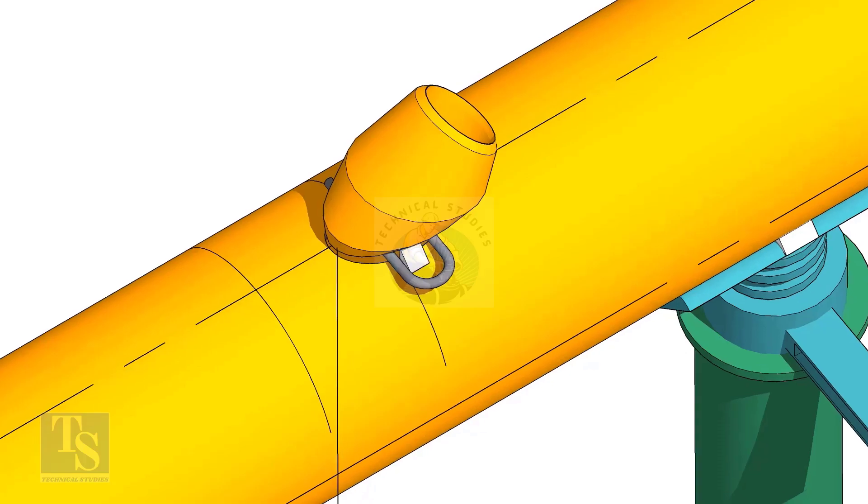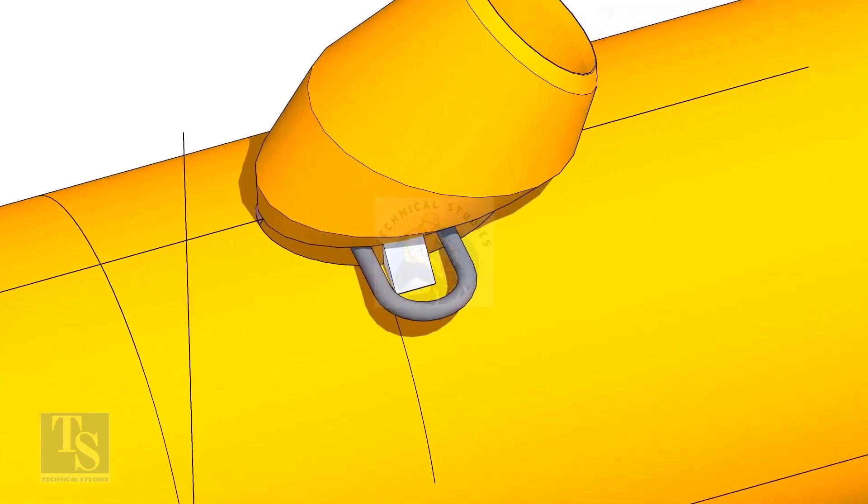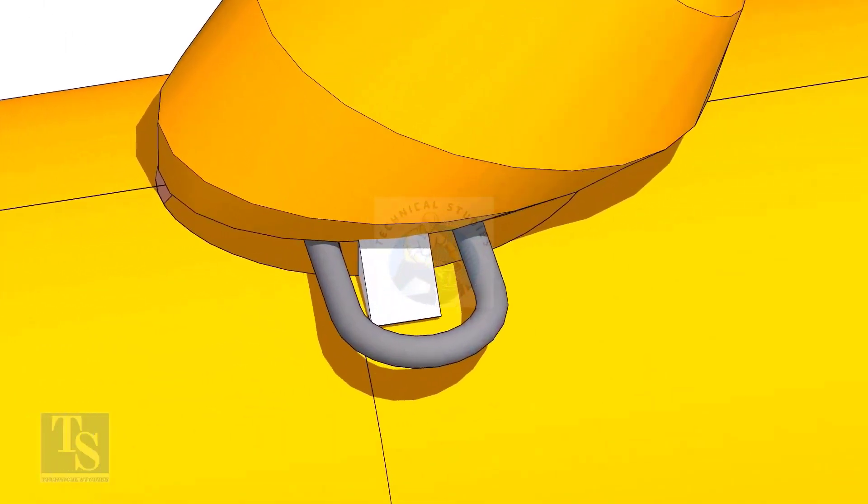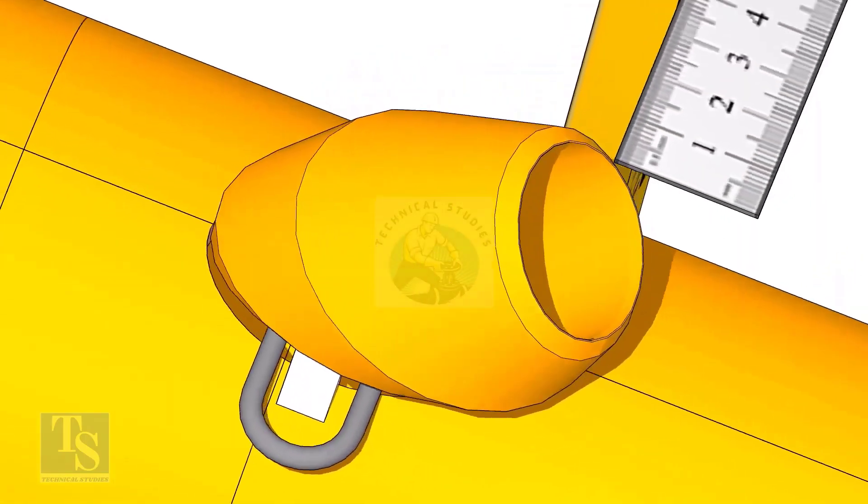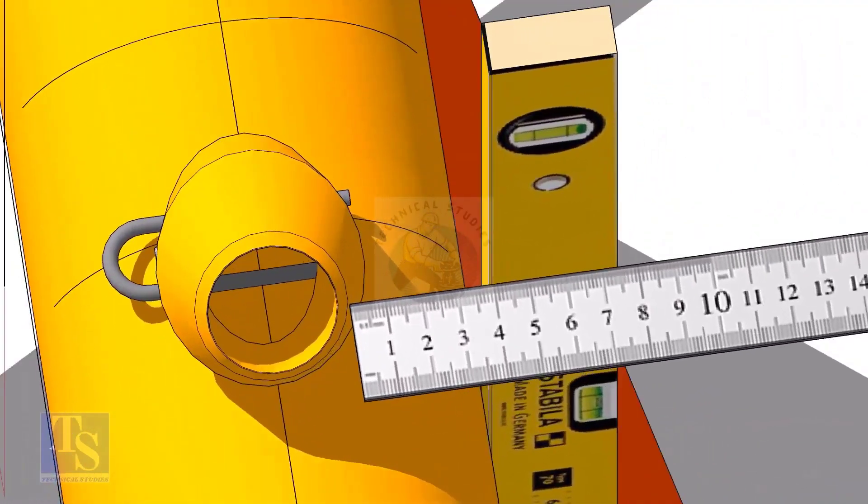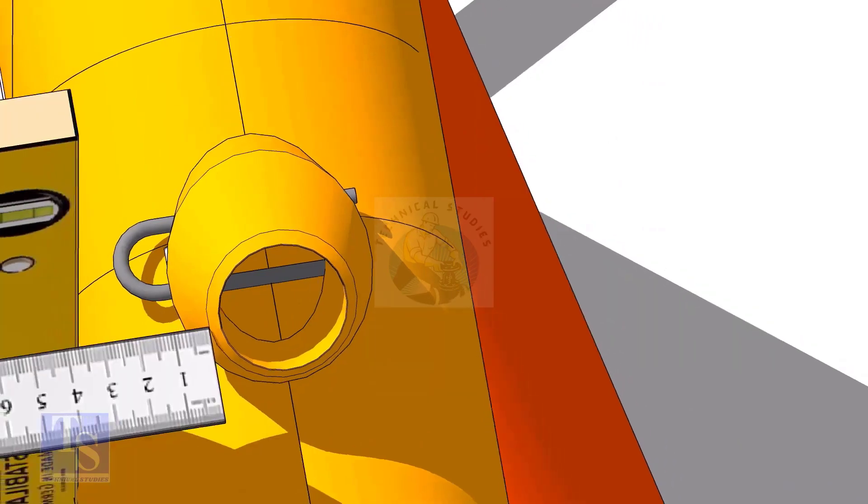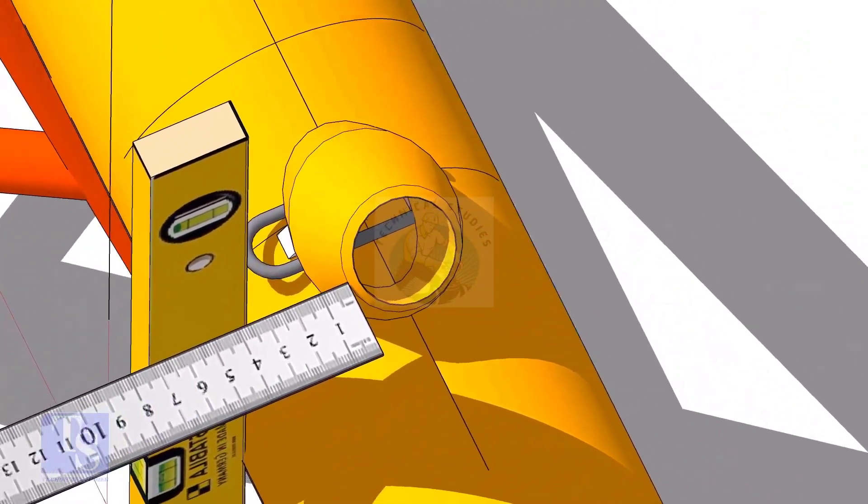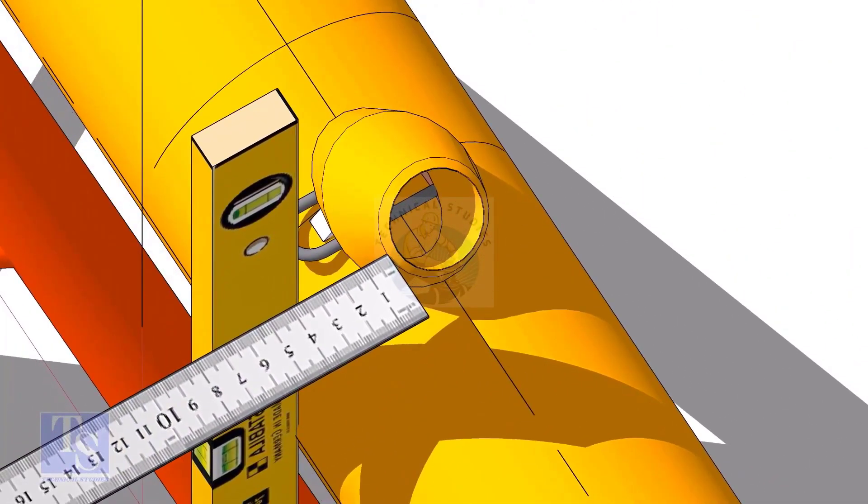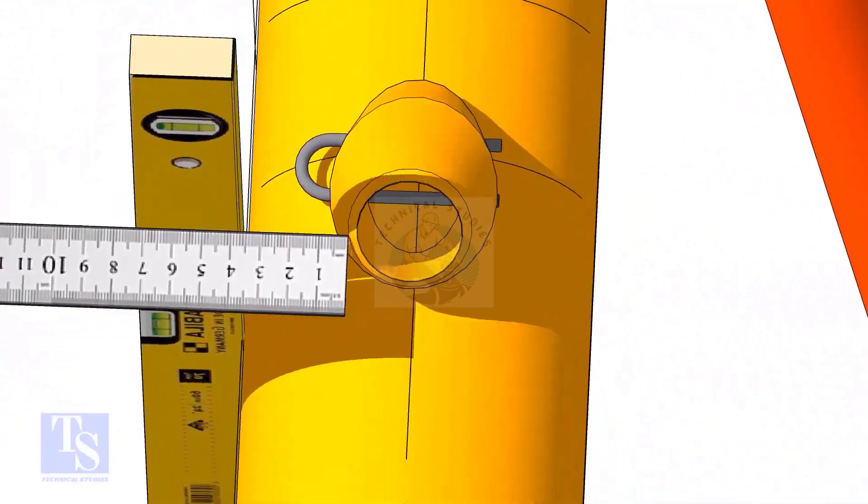Tack weld on one side. Equal the distance from both sides of the laterolette. Tack weld on the other side.